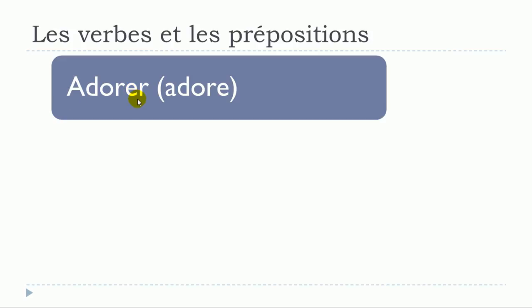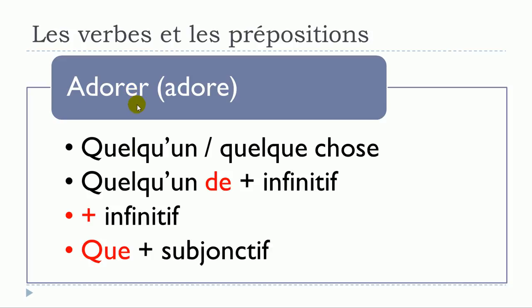Next is adorer. Adorer quelqu'un, adorer quelque chose, adorer quelqu'un de plus infinitif, adorer plus verbe à l'infinitif, and last but not least, adorer que plus verbe au subjonctif.